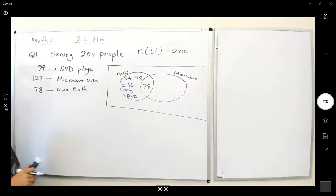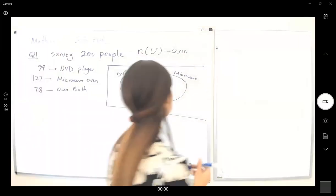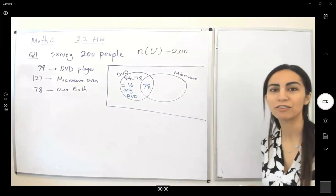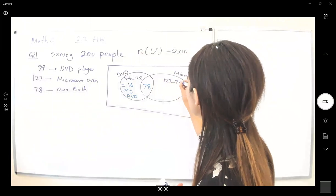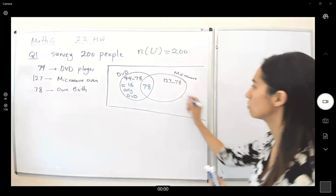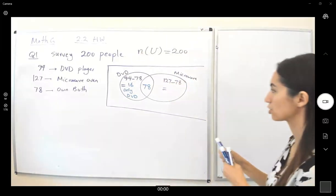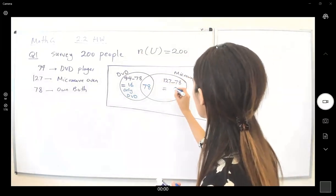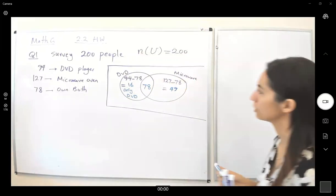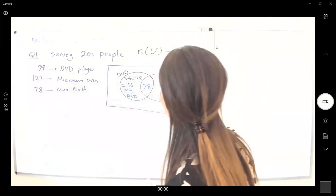So 16 people only own DVD player. With the same argument, the cardinality of microwave owners is 127. Out of those 127 people, 78 of them also own a DVD player. So the number of people who only own a microwave oven is 127 minus 78, which is equal to 49.